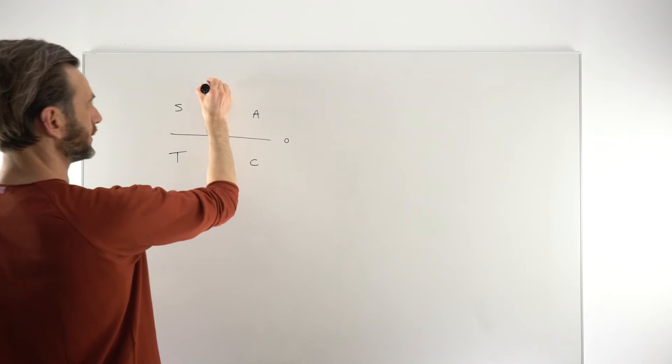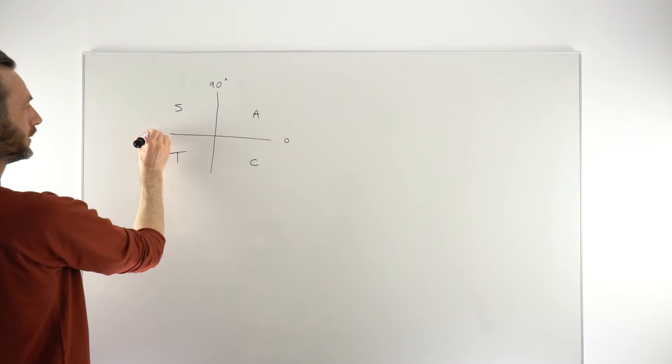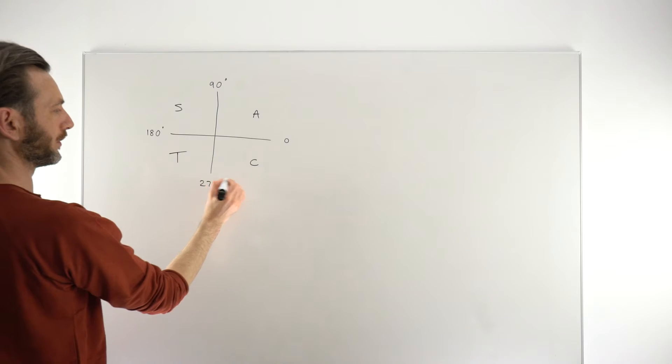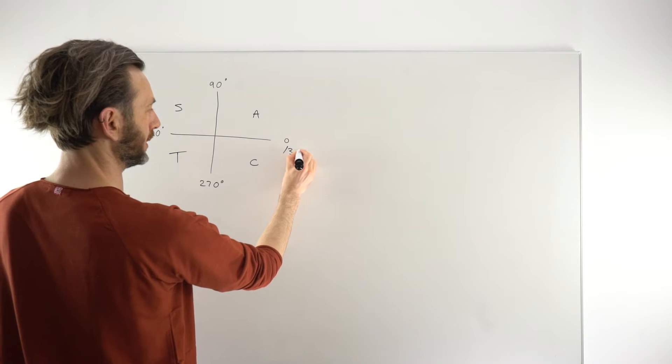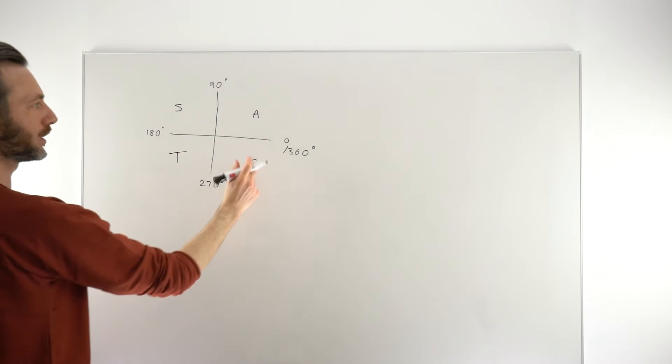So we draw the CAST diagram in degrees: 0 to 90 degrees for the first quadrant, 180 degrees, and then carrying on all the way around, going up in these 90 degree increments. So quadrant 1, 2, 3, 4.